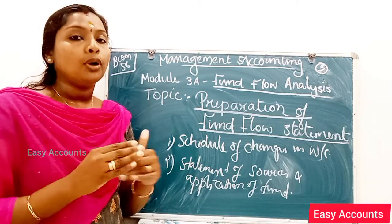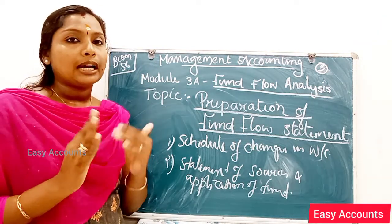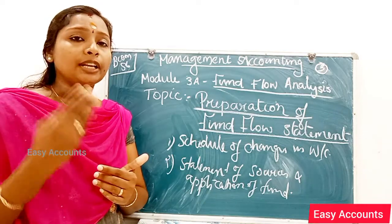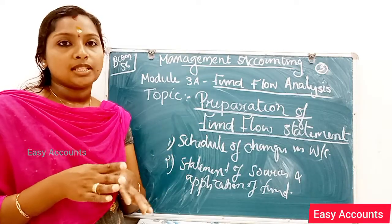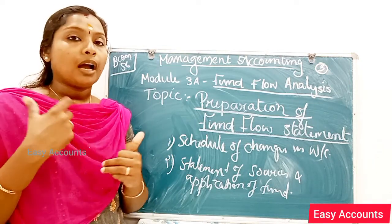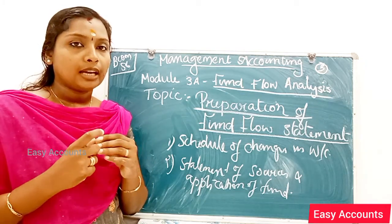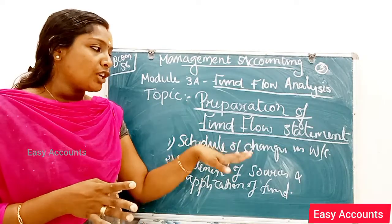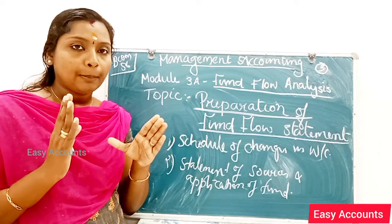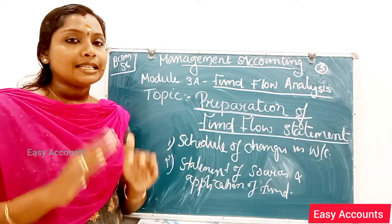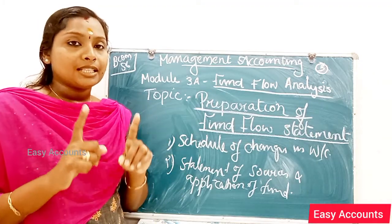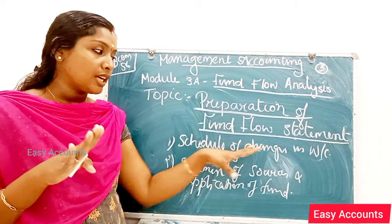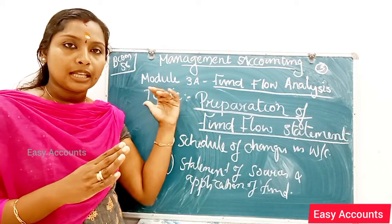The schedule of changes in working capital is prepared from the balance sheet. Current assets and current liabilities will be added from the balance sheet. Where adjustments are necessary, we make those adjustments. The statement of sources and application of funds is where adjustments and additional information are recorded, not in the schedule of changes in working capital.